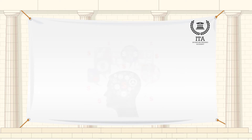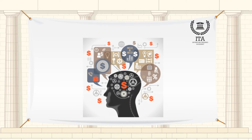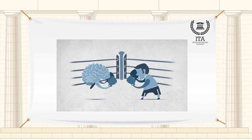Behavioral economics is a branch of economics that concentrates on explaining the economic decisions people make in practice, especially when these conflict with what conventional economic theory predicts they will do. Behaviorists try to augment or replace traditional ideas of economic rationality with decision-making models borrowed from psychology.